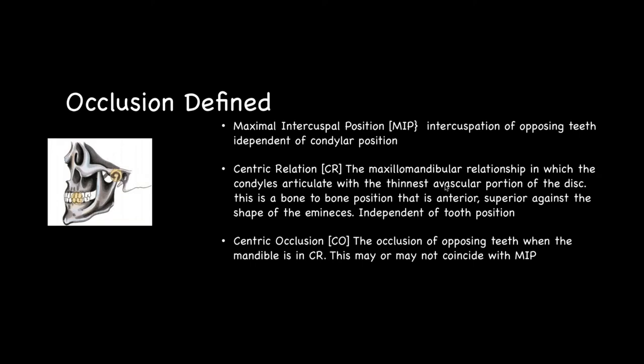To simplify: maximum intercuspation is a tooth term — how the teeth come together. Centric relation is a bone term — how the bone sits into the fossa. Centric occlusion is a combination of how teeth and bone position work together. In an ideal world these coincide. Today some call it centric related occlusion, though there's a tendency to move away from that term because it can imply there's an idealism to condylar or tooth position, when in reality it's highly individual.